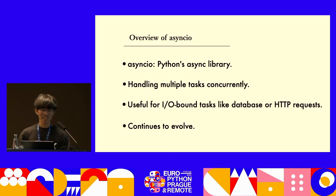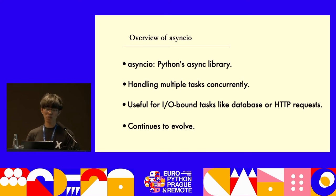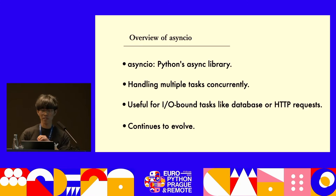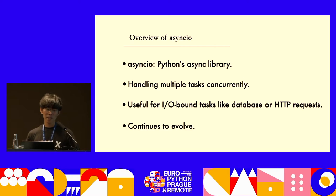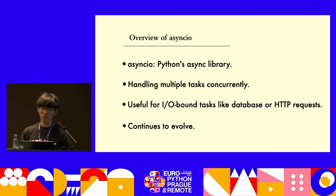Let's quickly go over AsyncIO. AsyncIO is Python's standard library for writing asynchronous code. It enables handling multiple tasks concurrently, and is especially effective when dealing with IO-bound tasks such as database access or HTTP requests. With every new Python version, AsyncIO continues to evolve, and high-level APIs have become more and more solid and very user-friendly.